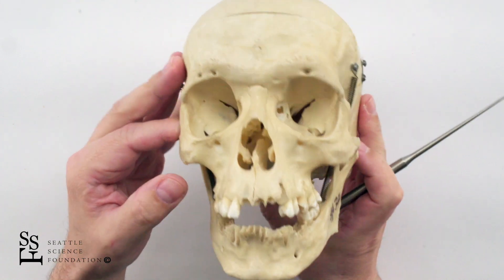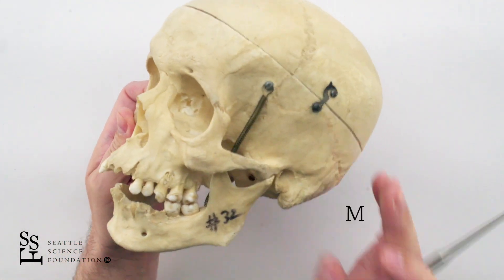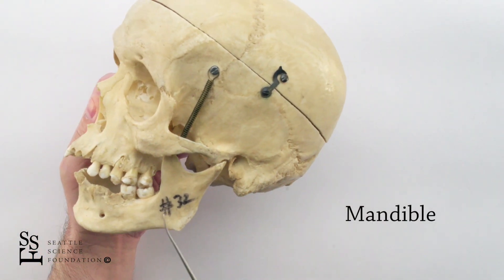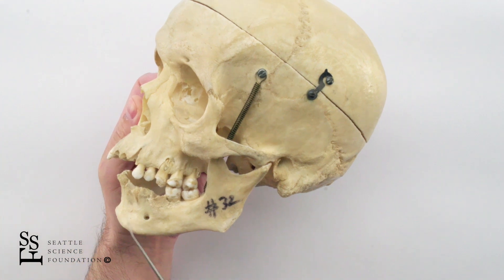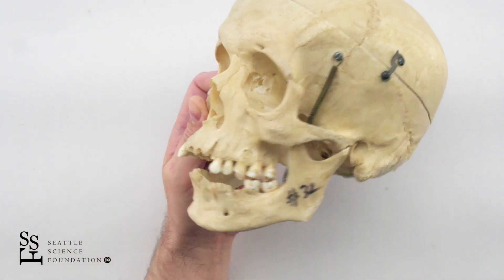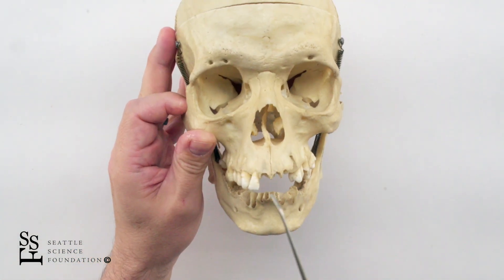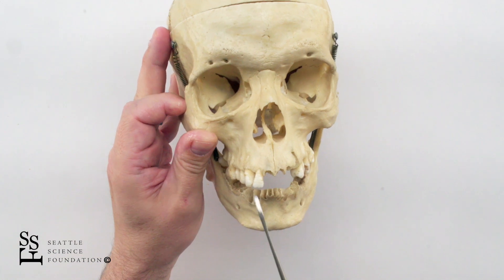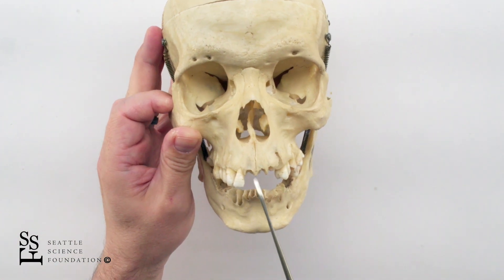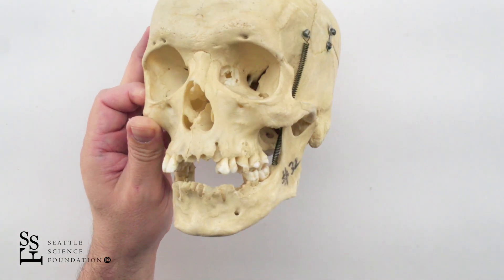Another prominent feature of the skull is the mandible, or our lower jawbone. We'll see that this specimen has some teeth and is edentulous in other areas.